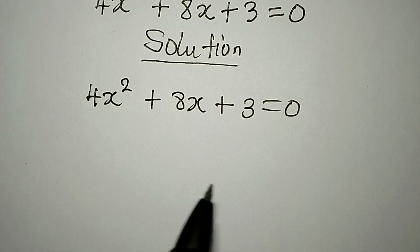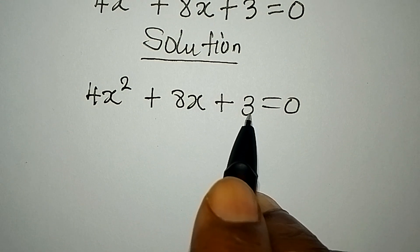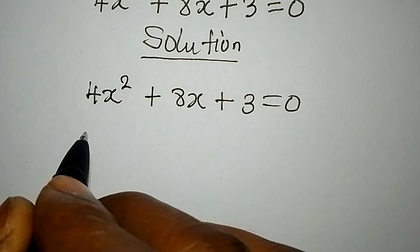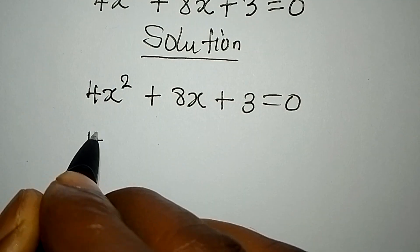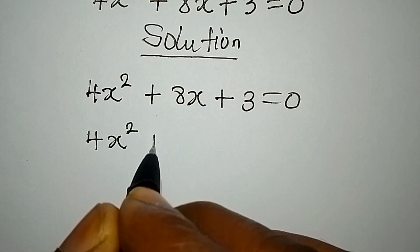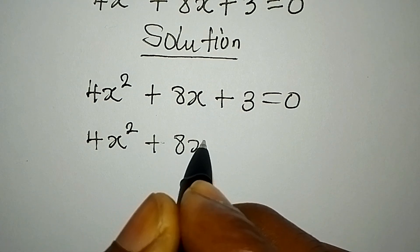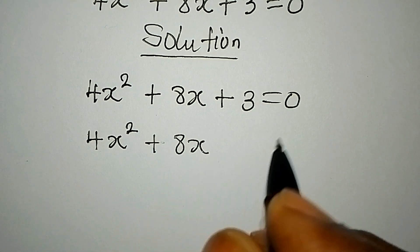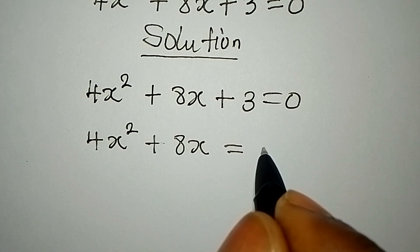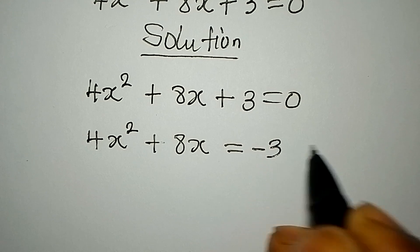The first step you're going to take is taking the constant to the right. So we're going to have 4x² + 8x equal to 0 minus 3, which gives us negative 3.